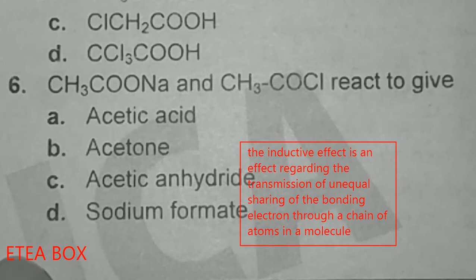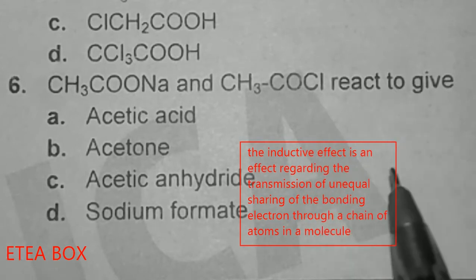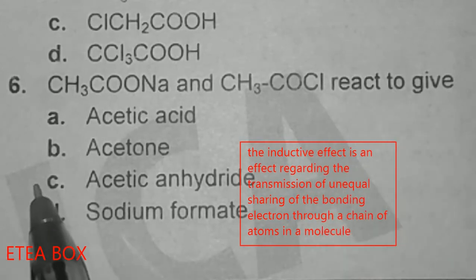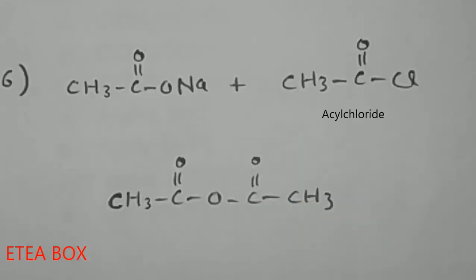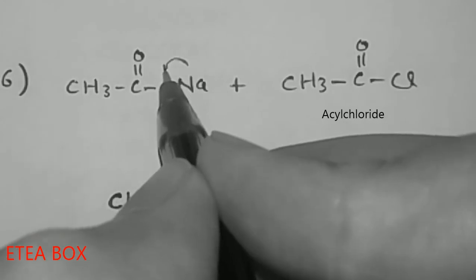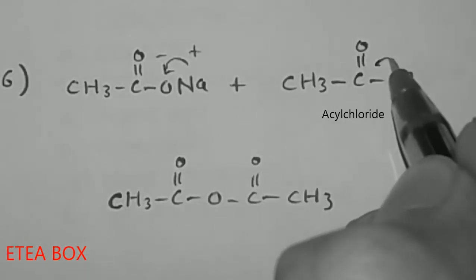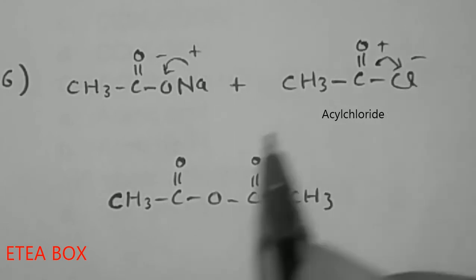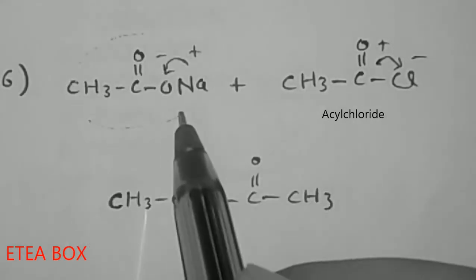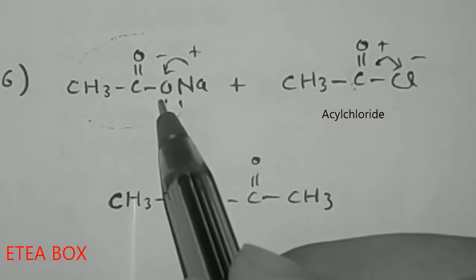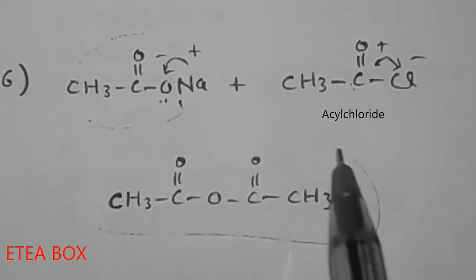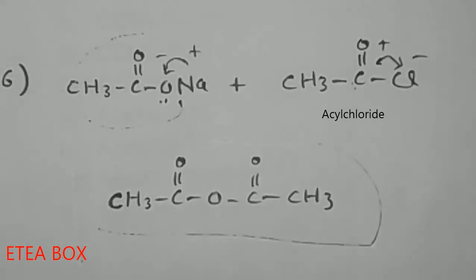CH₃C=ONa (sodium acetate) and CH₃C=OCl (acetyl chloride), when they react, the oxygen gets a negative charge and sodium gets a positive charge. The positive sodium combines with the negative oxygen. This gives acetic anhydride plus NaCl. Option C is correct.